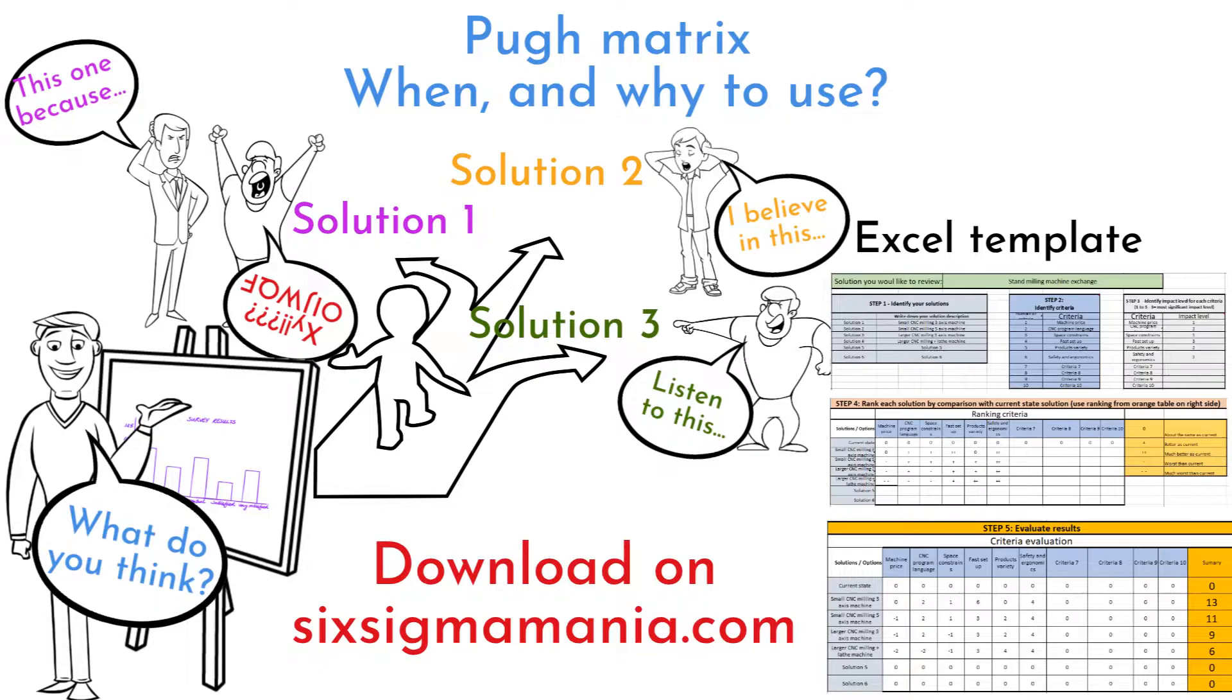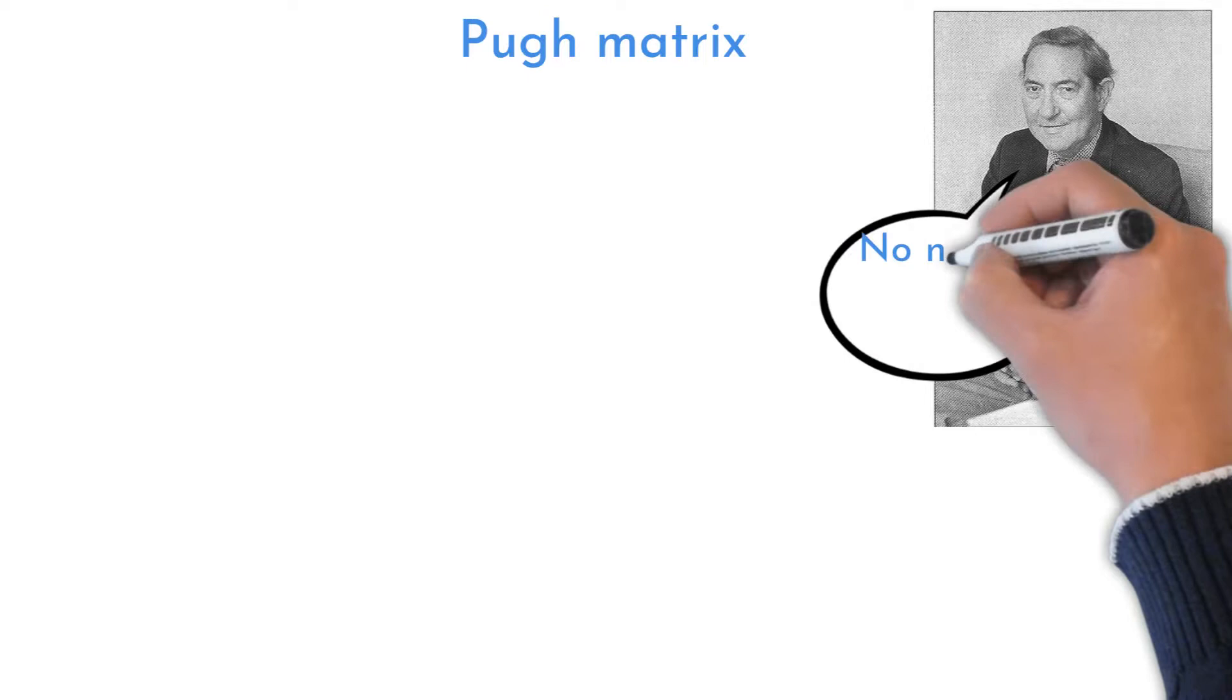Scottish scientist Dr. Stuart Pugh developed a method for improvement selection called Pugh's Controlled Convergence, more commonly known as the Pugh Matrix.